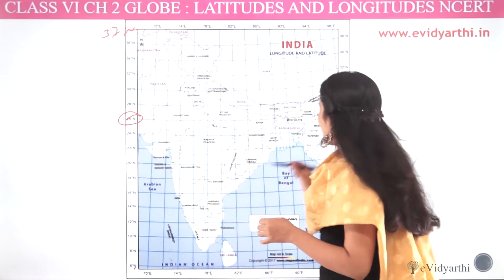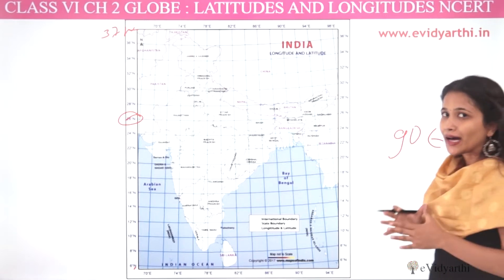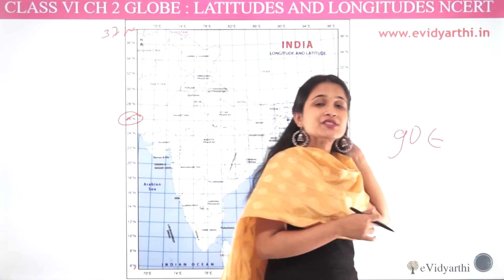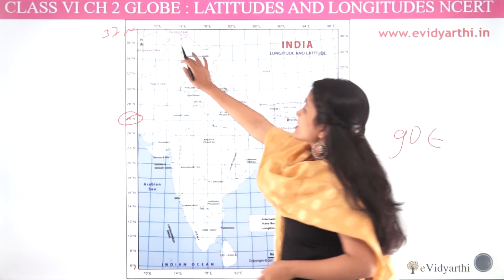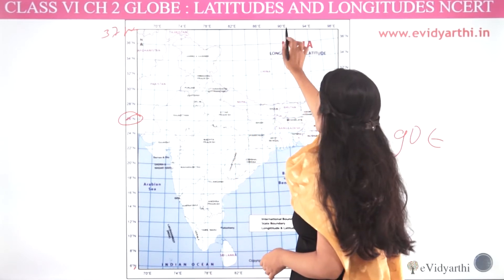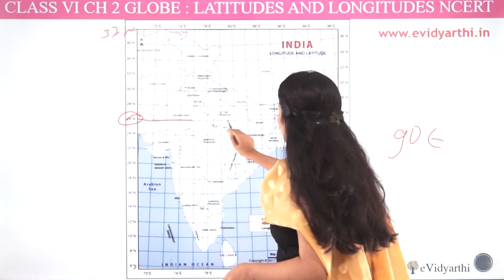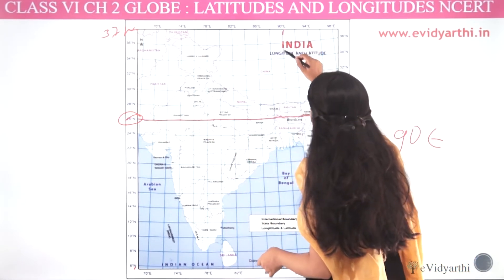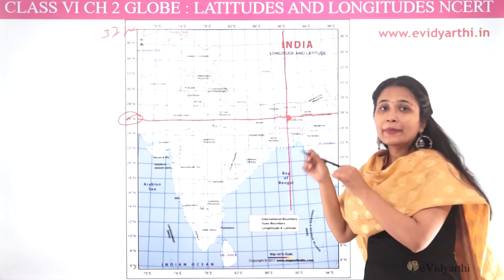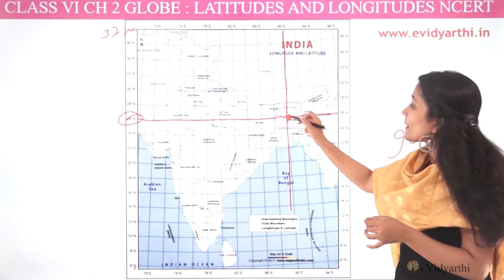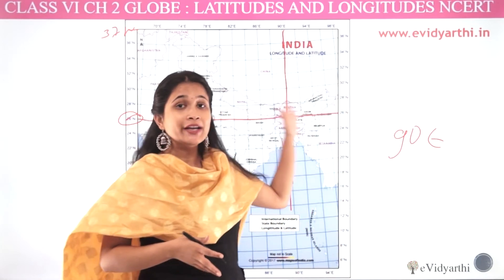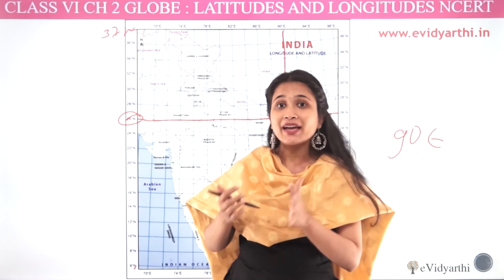Now, 90° east. India is in the eastern hemisphere, and all the lines are represented in the eastern hemisphere. The lines go 70°, 74°, 78°, 82°, 86°, and 90° east. I have traced this line, and where these two lines intersect, that inner edge point is where you find the location. You can find out any location this way.